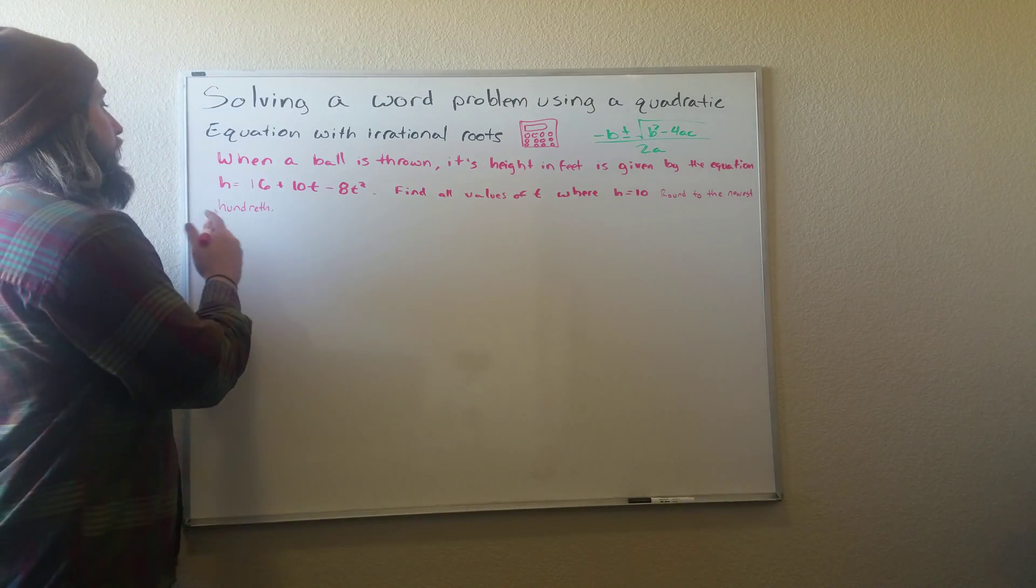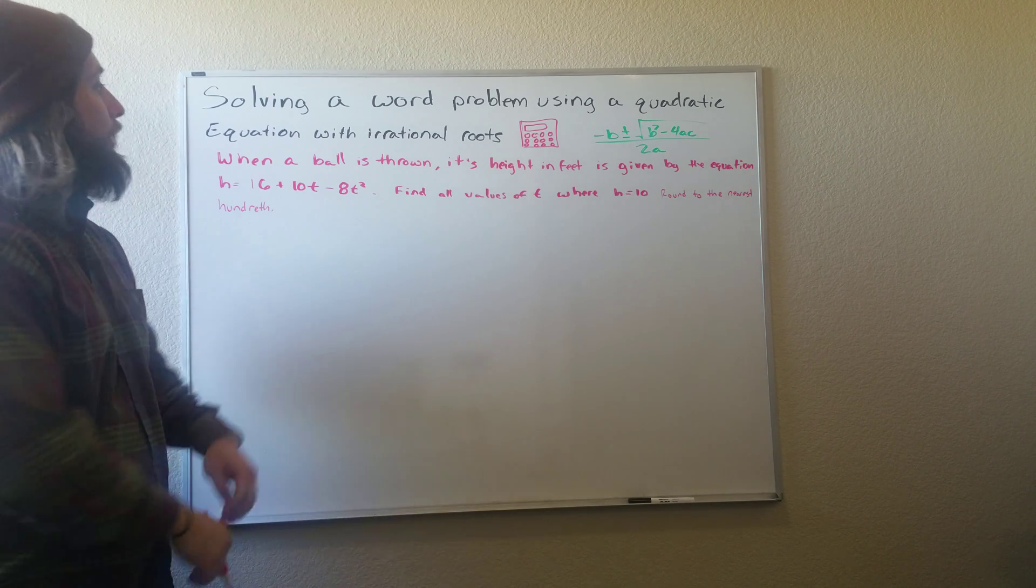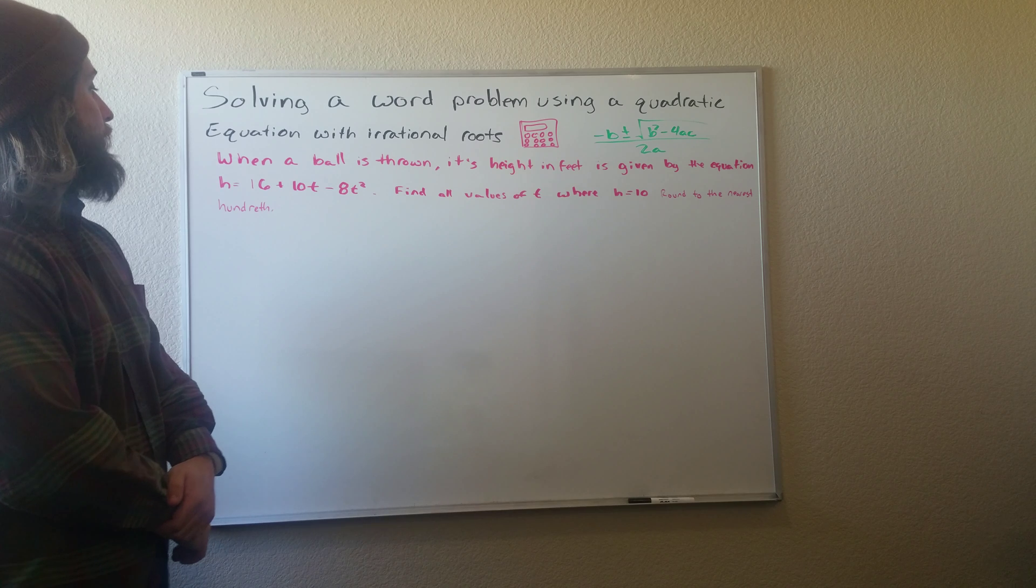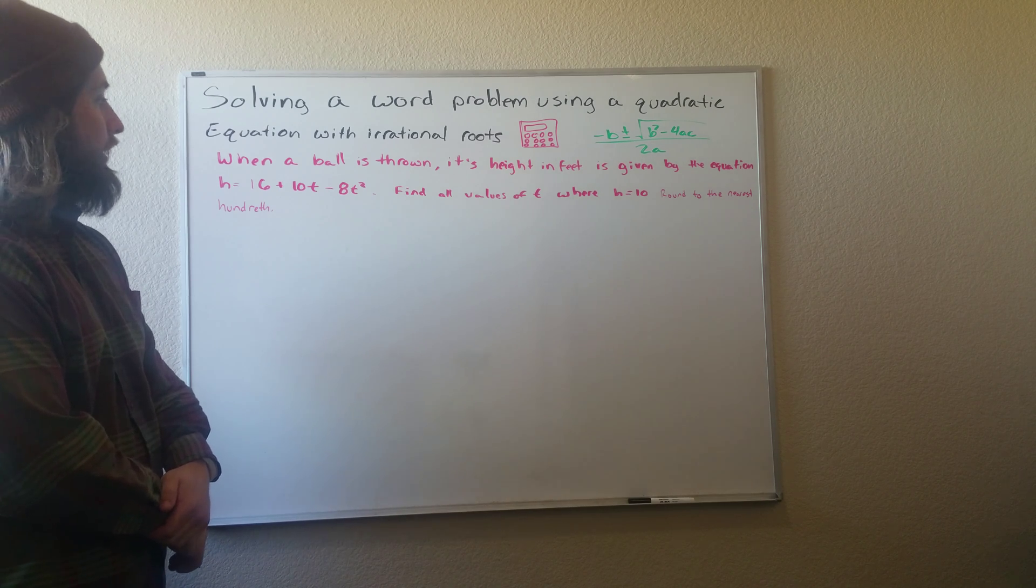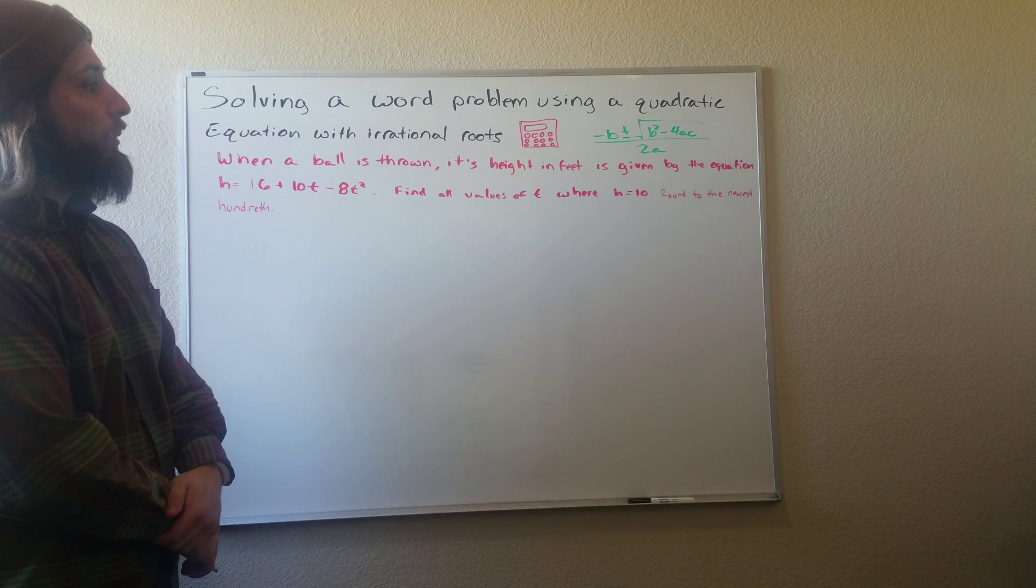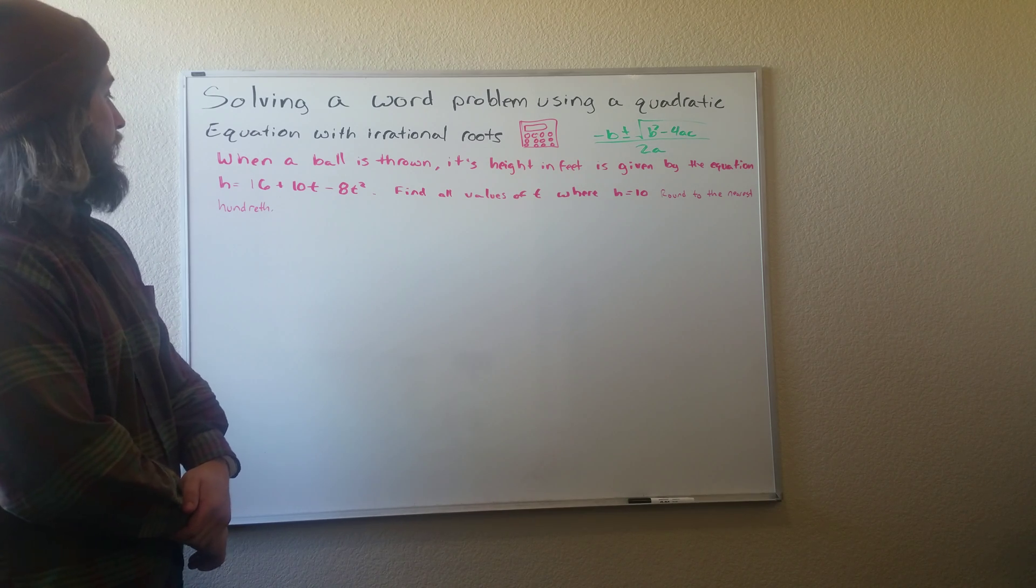So the problem states when a ball is thrown, its height in feet is given by the equation h equals 16 plus 10t minus 8t squared. Find all values of t where h equals 10. Round to the nearest hundredth.